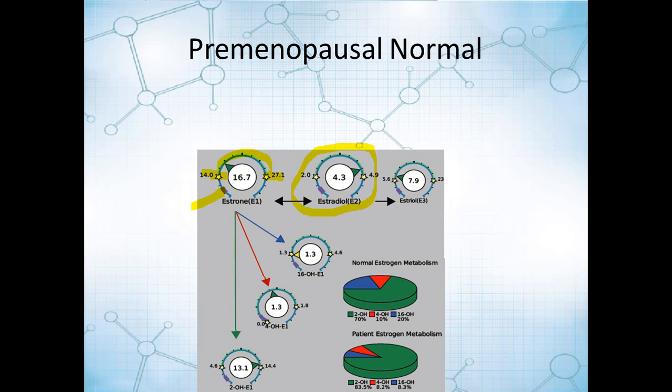For this particular patient in this example, it's on the upper side of normal. Some of these other estrogens, you can see a couple of them on the higher side of normal, a couple of them on the lower side of normal. This patient, it's a little bit of a mixed bag, but overall, kind of a normal to high normal picture. Again, putting extra weight on the estradiol as the most potent estrogen.